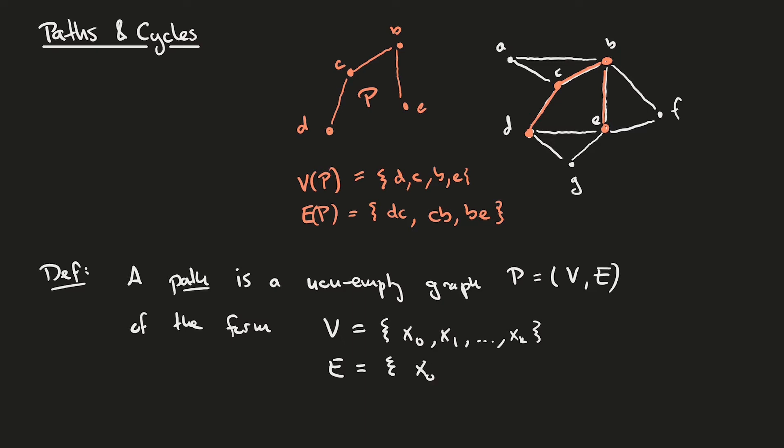So we have an edge x0, x1, x1, x2, and so on, all the way up to xk minus 1, xk. Furthermore, we stipulate that the xi's are all distinct.